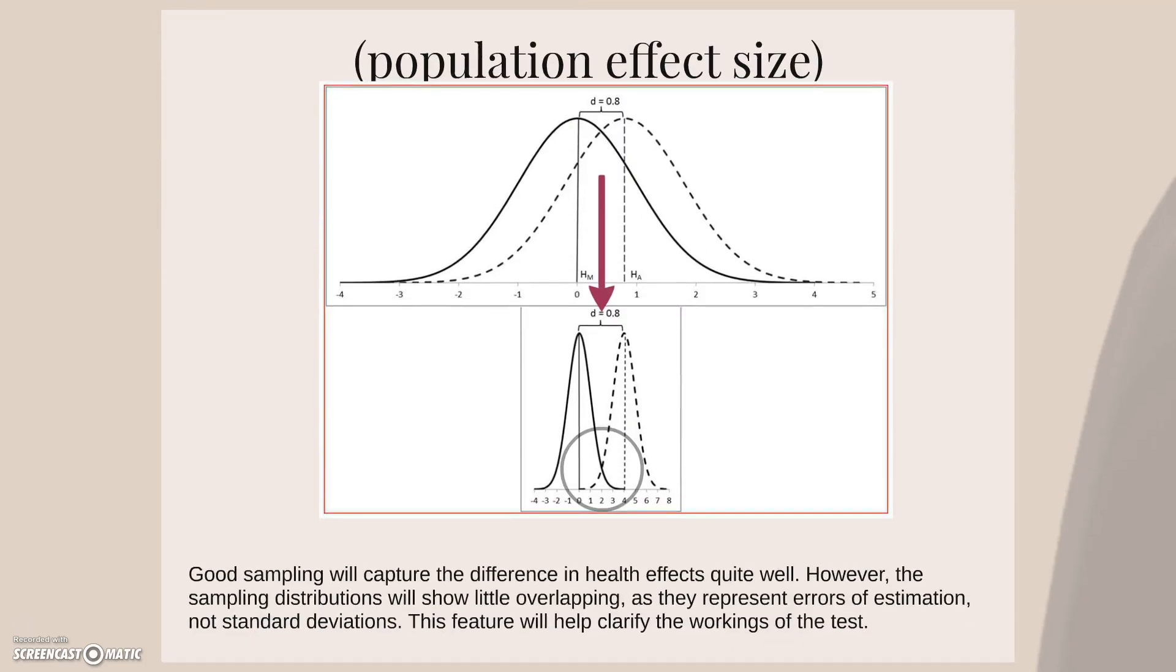Good sampling will capture the difference in health effects quite well. However, the sampling distributions will show little overlapping, as they represent errors of estimation, not standard deviation. And this will be a feature that will help us later on to clarify the workings of the test.